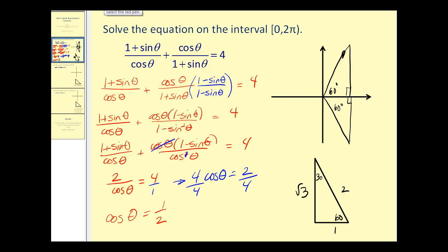Therefore, theta could be 60 degrees or pi over three radians, or theta could also be 300 degrees or five pi over three radians. So this equation was fairly involved, but remember one of those strategies we were using to verify identities was to multiply by the conjugate. Let's take a look at another.